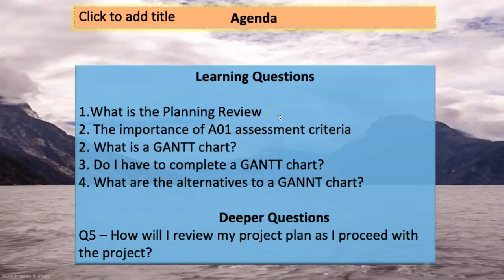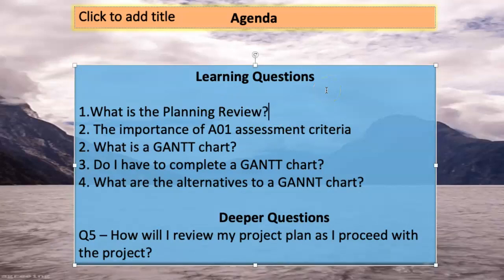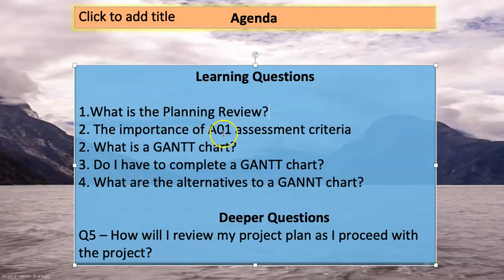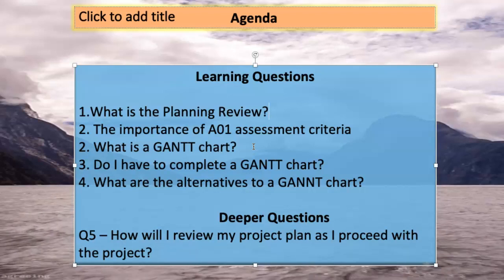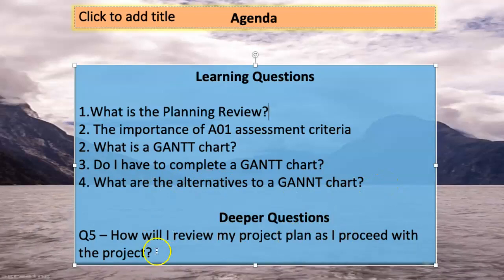More specifically, this is what we'll be looking at: what is the planning review, the production log, the importance of AO1 assessment criteria, what's a Gantt chart or organisational chart, and a whole variety of ways in which you have to show planning. Do you have to complete a Gantt chart, and what are the alternatives? The deeper question you need to consider is how will you review your project plan as you proceed, and how will you show evidence to your supervisor, the coordinator, and the examiner that you've been looking critically at your plan and evaluating it?